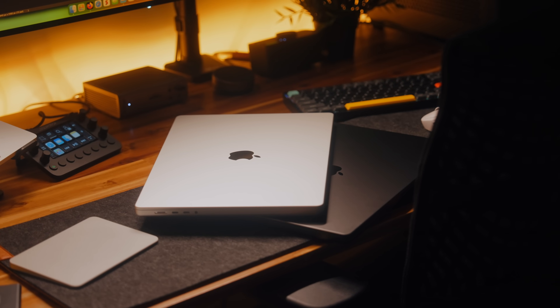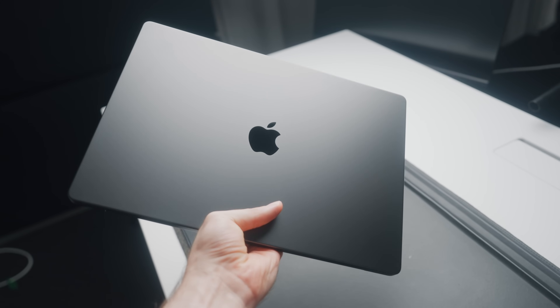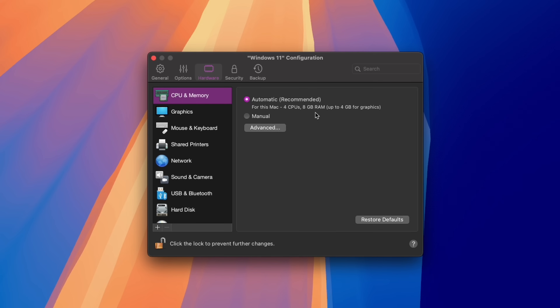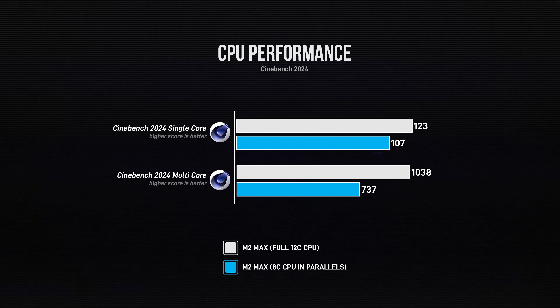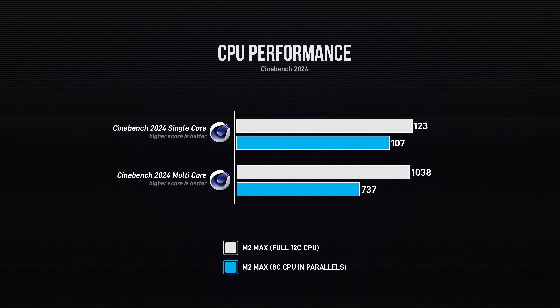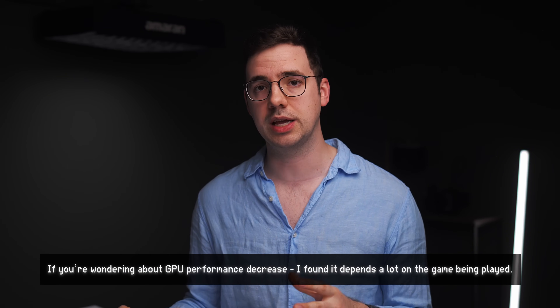For reference, this is an upgraded M2 Max MacBook Pro with 12 CPU cores, 38 GPU cores, and 32 gigabytes of RAM. I allocated CPU cores and RAM to give Parallels as much as possible to maximize gaming performance, while keeping a little for macOS to run at the same time. Before installing games, I did a few quick benchmarks: in Cinebench, the M2 Max scores 123 for single-core and 1038 for multicore in macOS. Inside Parallels, I got 107 for single-core and 737 for multicore — about a 13% decrease in single-core and 28% for multicore, which makes sense since I'm only using eight of the 12 CPU cores in Parallels.